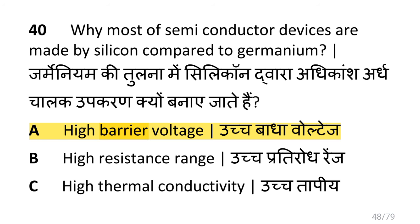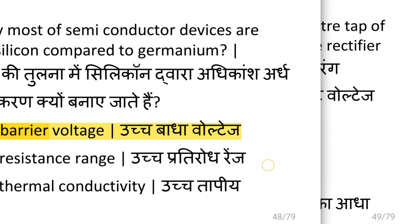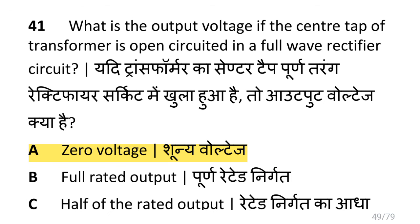Why are most semiconductor devices made of silicon compared to germanium? Because of the high barrier voltage. What is the output voltage if the center tap of the transformer is open-circuited in a full-wave rectifier circuit? i.e. 0 volts.